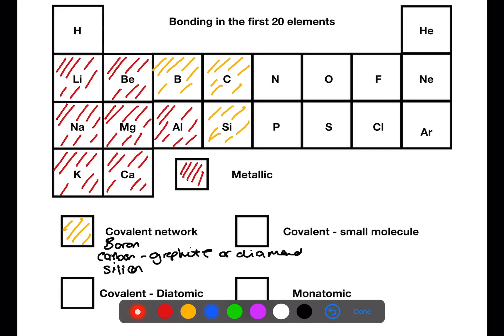Let's look now at the small covalent molecules. We'll shade those in blue. We have phosphorus and sulfur but also carbon. Phosphorus exists as P4 molecules. Sulfur exists as S8 molecules and carbon can exist as fullerenes. For example, C60.